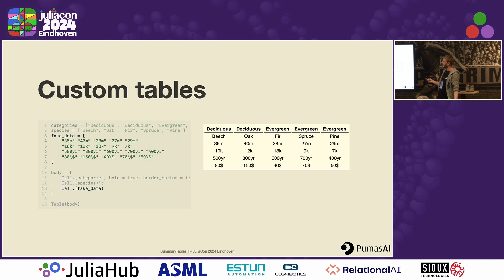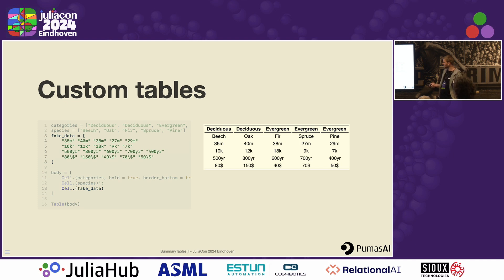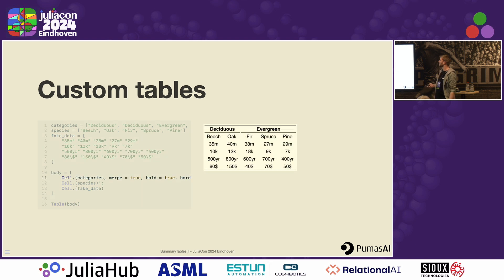The next thing is some fake data — in this case just a matrix of strings, though you could also use numbers. There's some more convenience in SummaryTables for how to handle rounding and how exactly you want to display these numbers — you can check the docs for that, there's a bunch of options. We concat that into the table, and now we already have the first version. Then the next step is to actually merge the column headers — we pass the merge true keyword to the cells that relate to the column headers, and it will merge all the ones that are exactly the same next to each other. That's a pretty simple way to do this.